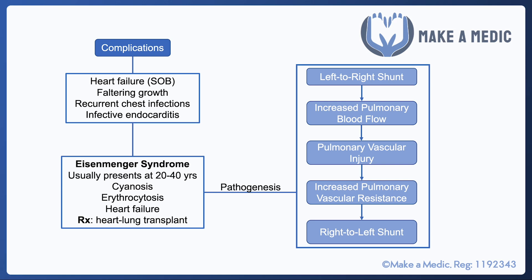If there is some sort of septal defect, there will initially be a left-to-right shunt. This is because the left side of the heart is naturally stronger than the right, so the direction of flow through the defect will be from left to right. This means more blood than expected goes into the pulmonary trunk and pulmonary arteries, leading to pulmonary vascular injury. As an adaptive response, there is an increase in pulmonary vascular resistance.